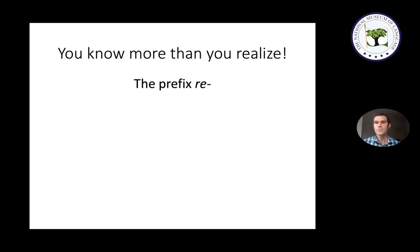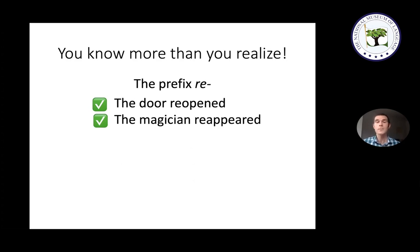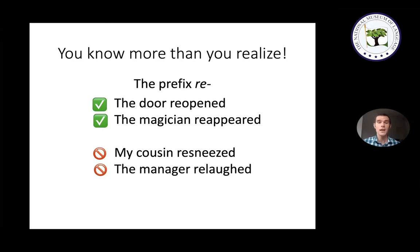Another aspect of your language that you know on some level but might not have consciously realized relates to the prefix 're-'. This prefix can modify verbs to show that the action is repeating — for instance, 'the door reopened' means the door opened again, and 'the magician reappeared' means the magician appeared again. But it only works for certain verbs. 'My cousin re-sneezed' is ungrammatical, and so is 'the manager re-laughed', even though the intended meanings are clear.